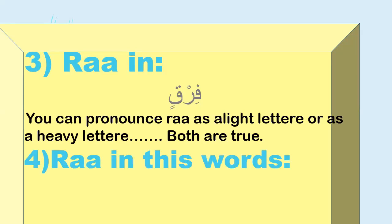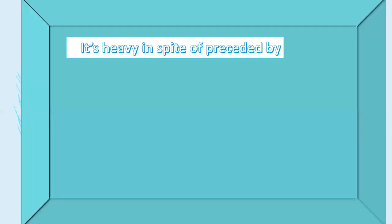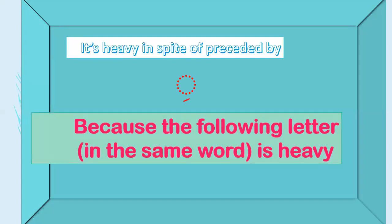Fourth exception: Ra in words like 'Labil-mirsaad', 'Firqat', 'Qirtaas', 'Wirsaala', 'Ir' — Ra is heavy in spite of being preceded by Kasra, because the following letter in the same word is a heavy letter.